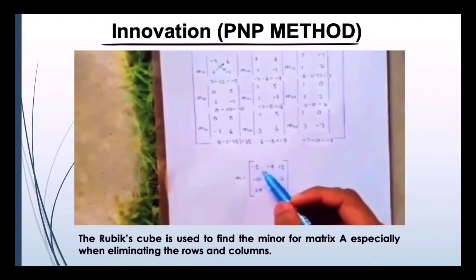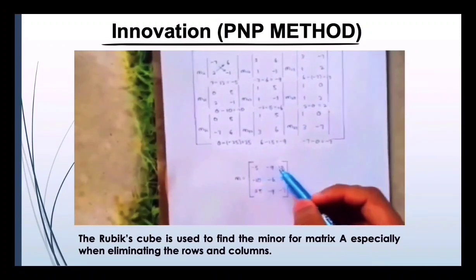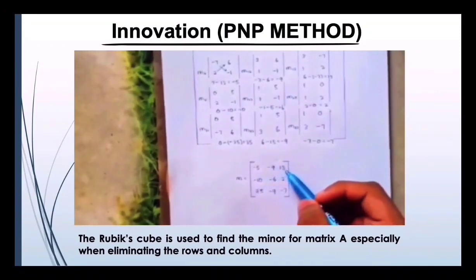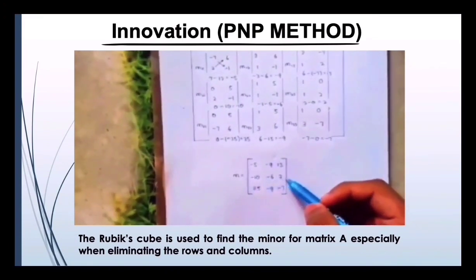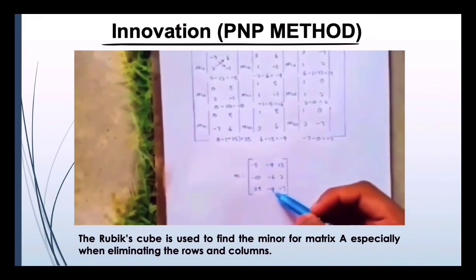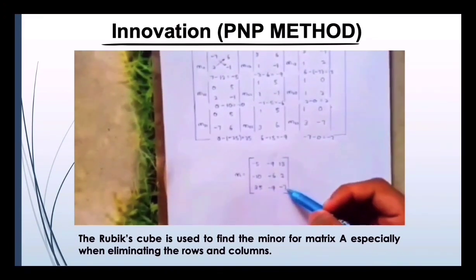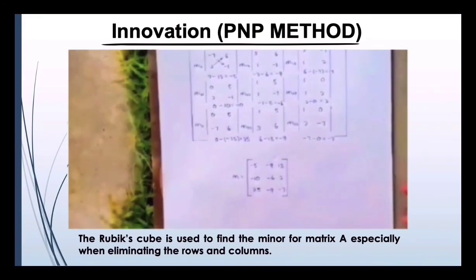For the last, we have the answers: negative 5, negative 9, 13, negative 10, negative 6, negative 5, negative 9, negative 7. The alubicube is used to find the minor of matrix A, especially when eliminating the rows and columns.